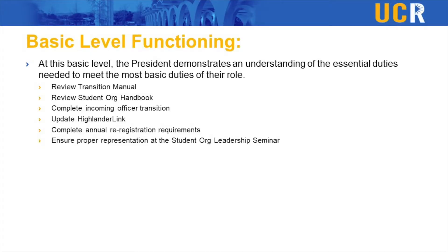At the basic level, you're going to see things like reviewing this manual, reviewing the student org handbook, and completing the transition from incoming to outgoing. You're going to update Highlander Link, complete the annual re-registration requirements — which are not optional — and make sure someone shows up to the org leadership seminars. Again, not optional.